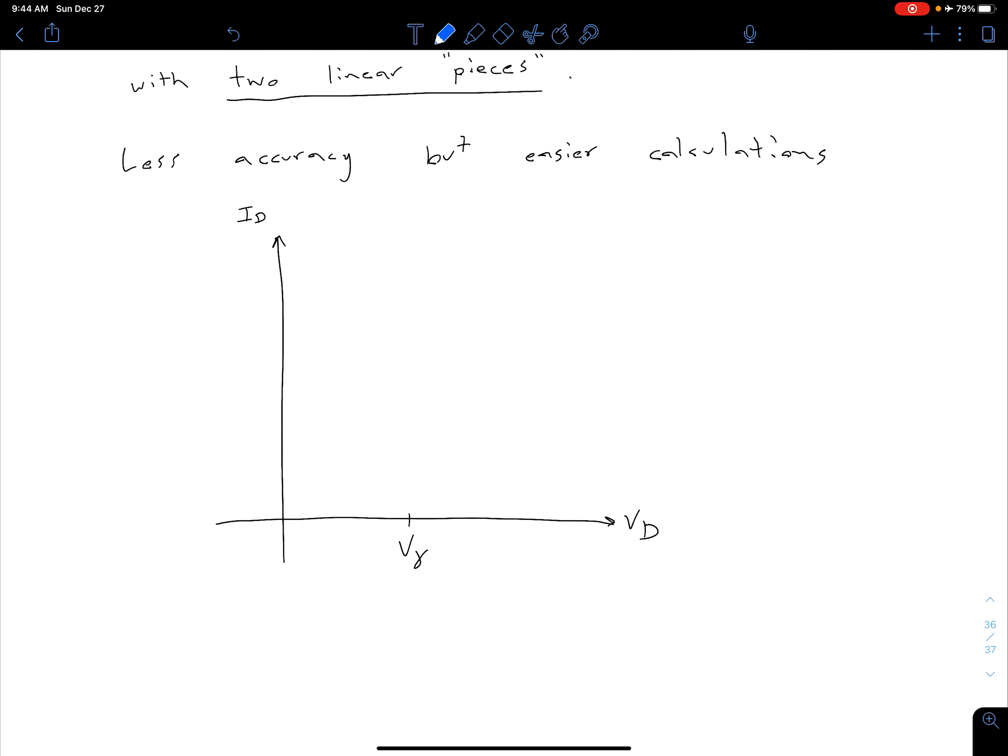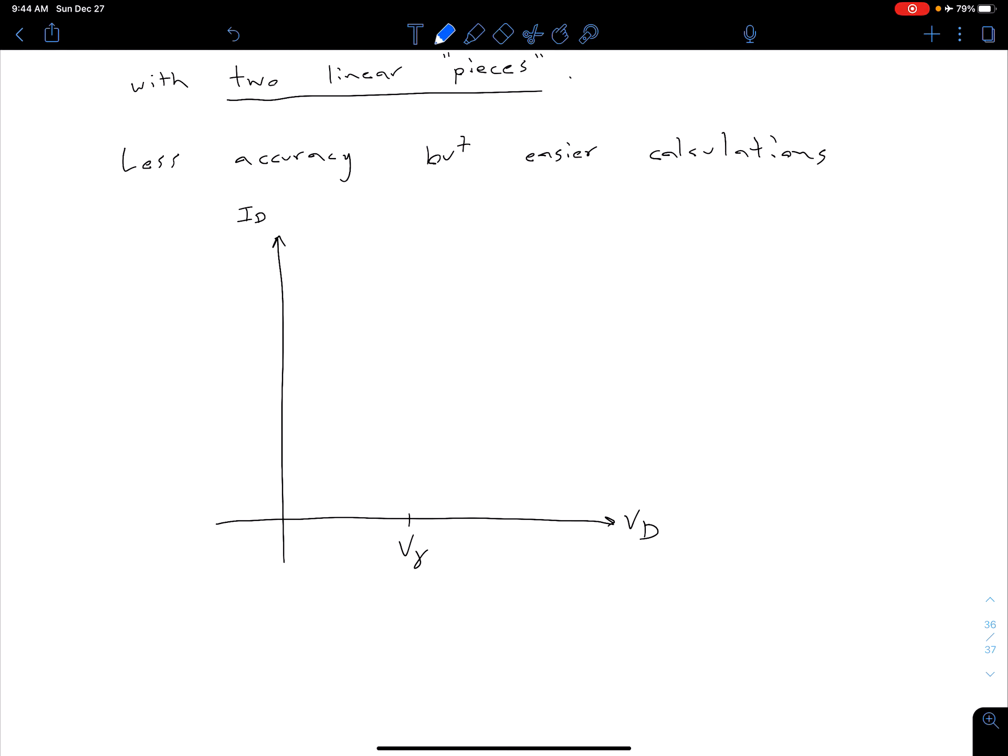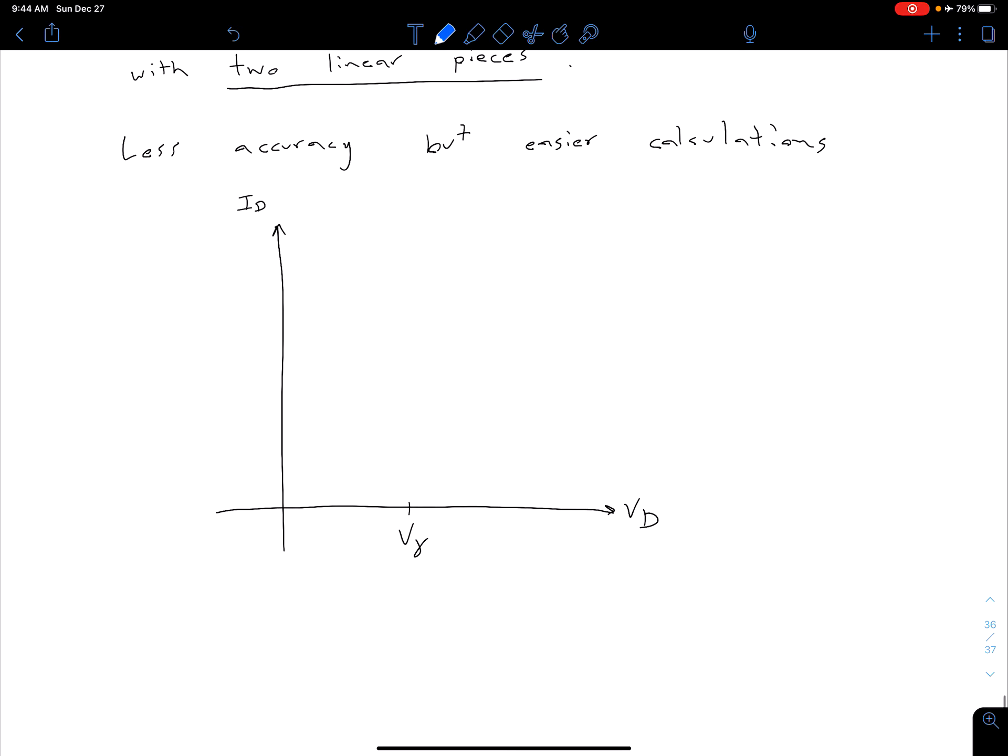So what we're going to say is we have two linear pieces. We're going to say for any voltage VD less than V gamma, we just have zero current. So we're going to say we have zero current for any voltage VD less than V gamma.